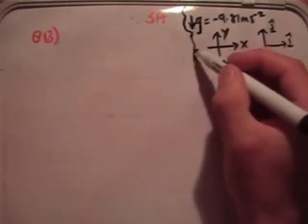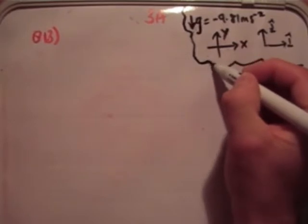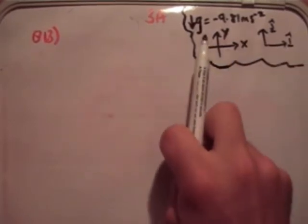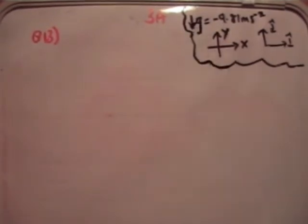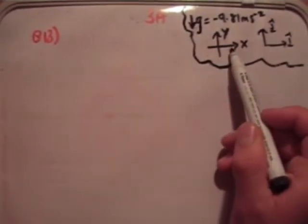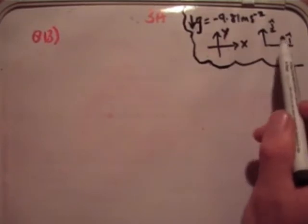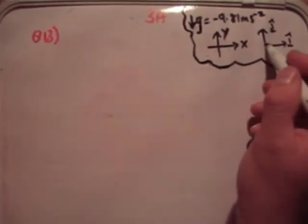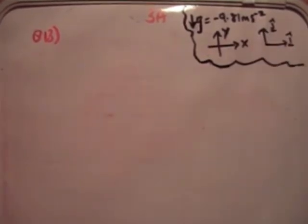So the first thing is to note the same things I've done with every question so far. The gravity is negative 9.81 meters per second squared in this direction. This is our Cartesian or xy-plane and these are our usual unit vectors i-hat and j-hat.